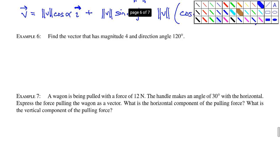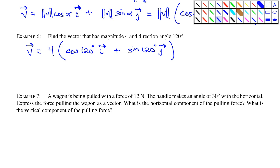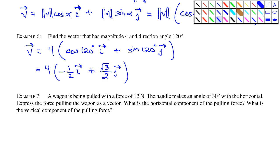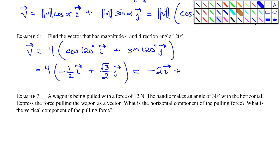Example 6: Find the vector that has magnitude 4 and a direction angle of 120 degrees. Using the formula, v = 4(cos 120° · i + sin 120° · j). Cosine of 120° is negative one-half, and sine of 120° is root 3 over 2. Distributing the 4 gives negative 2i plus 2 root 3 j.